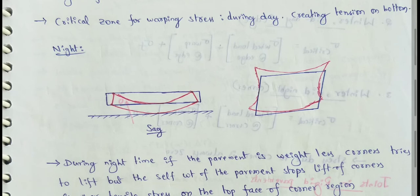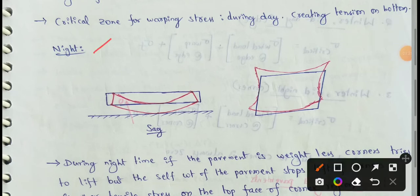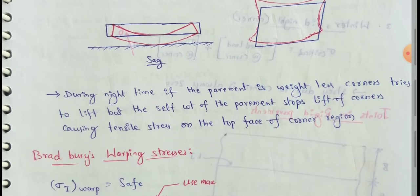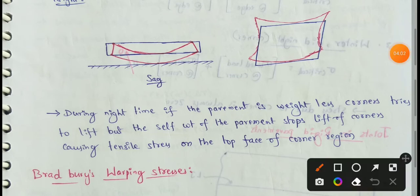At night, the rigid pavement will be in the sagged condition — the sag shape. The corners are the critical point. If the pavement is weightless, corners tend to lift, but the self-weight of the pavement stops the lift of corners, causing tensile stresses on the top face of the corners region. Under the critical condition, corners are lifted and tensile stresses act on the top face.